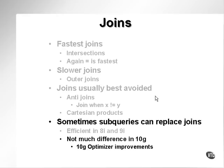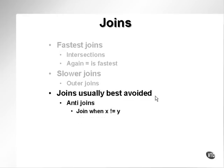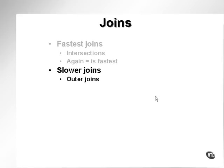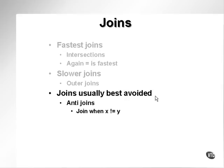In summary, the fastest and most efficient joins are essentially intersections. A slightly slower type of join is an outer join, and joins that are usually best avoided are generally anti-joins, negative joins, and Cartesian products.